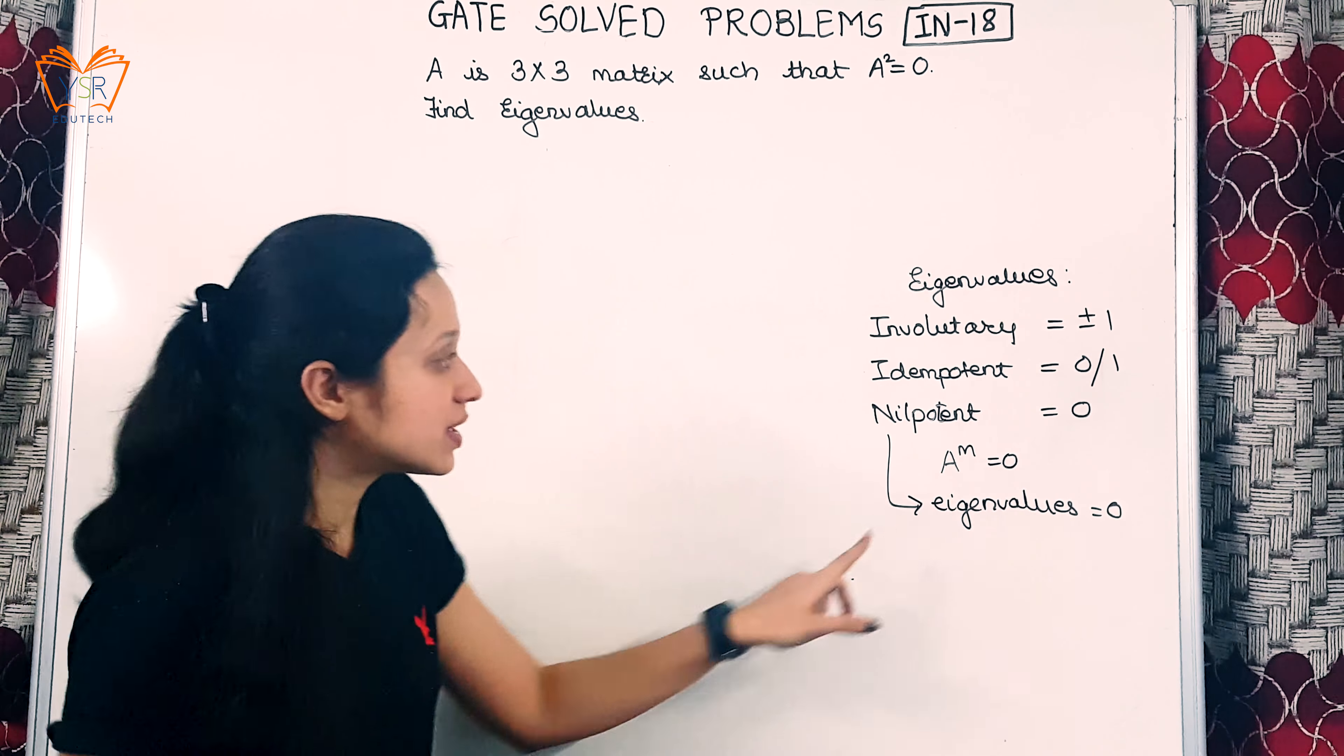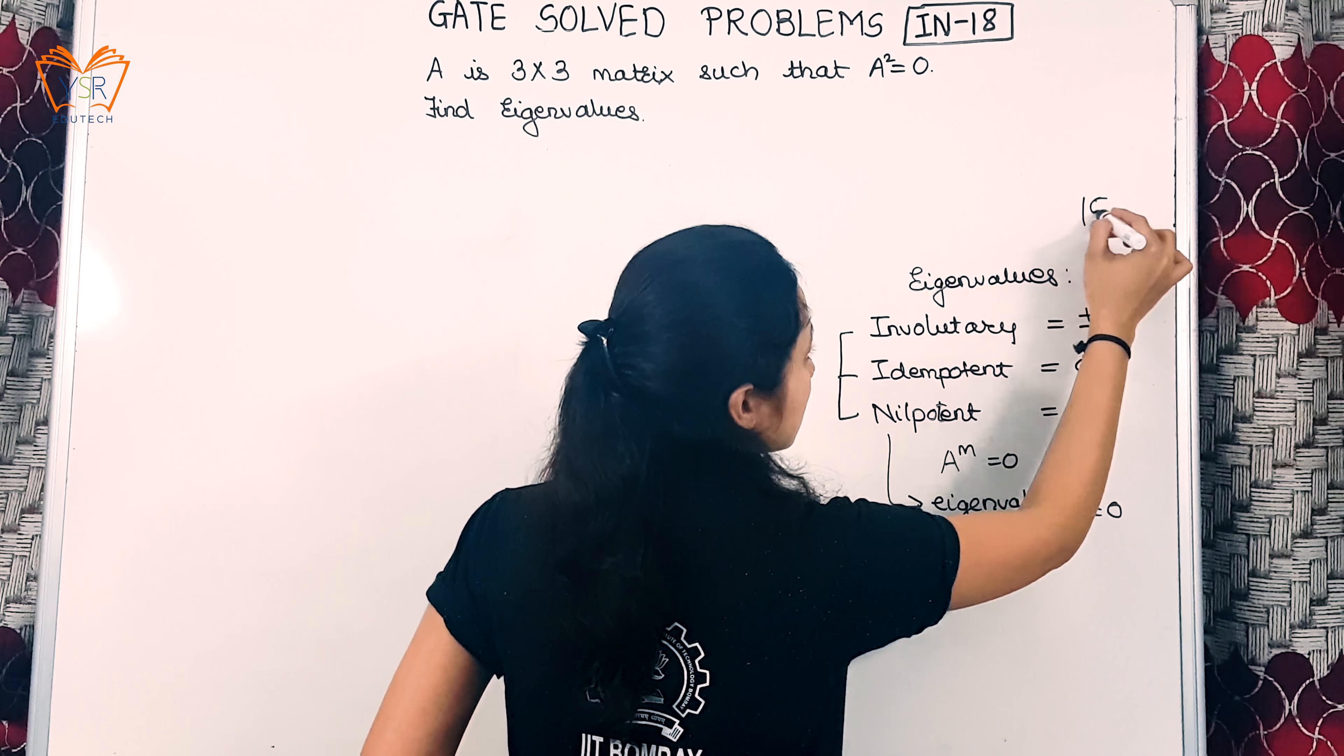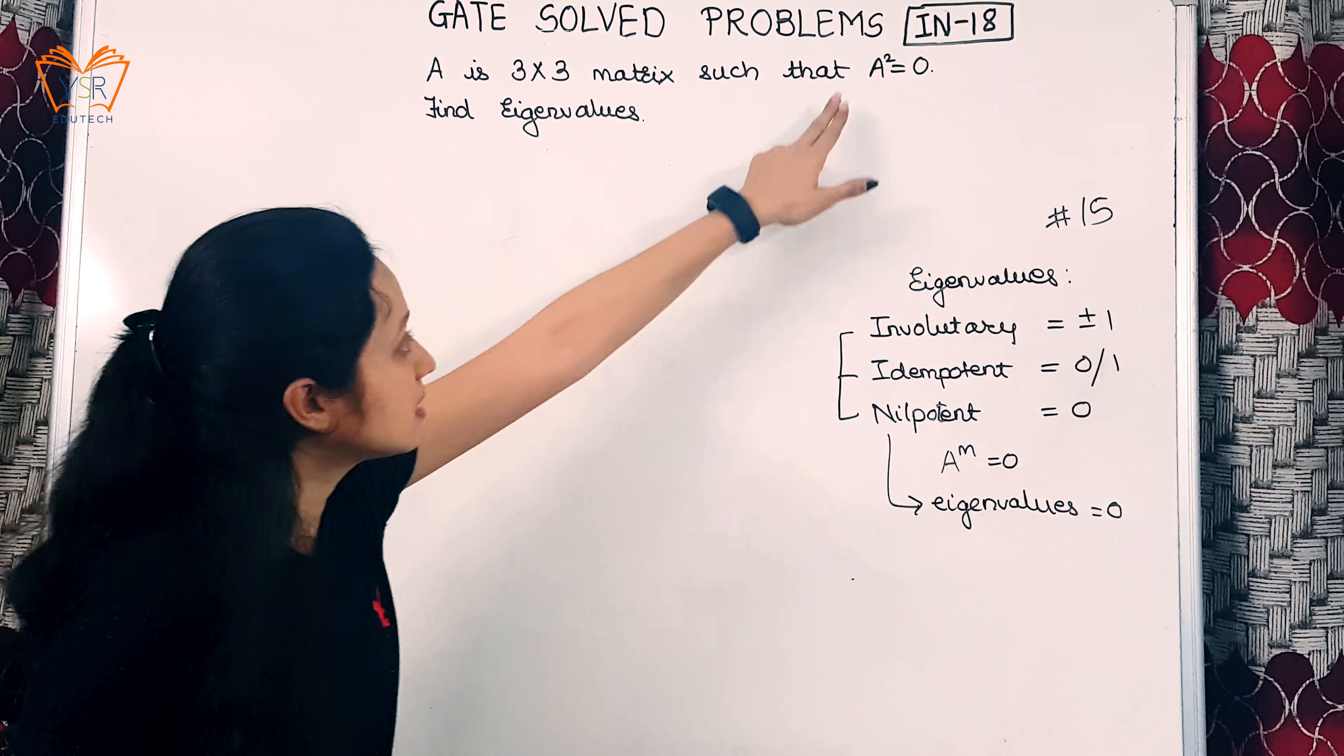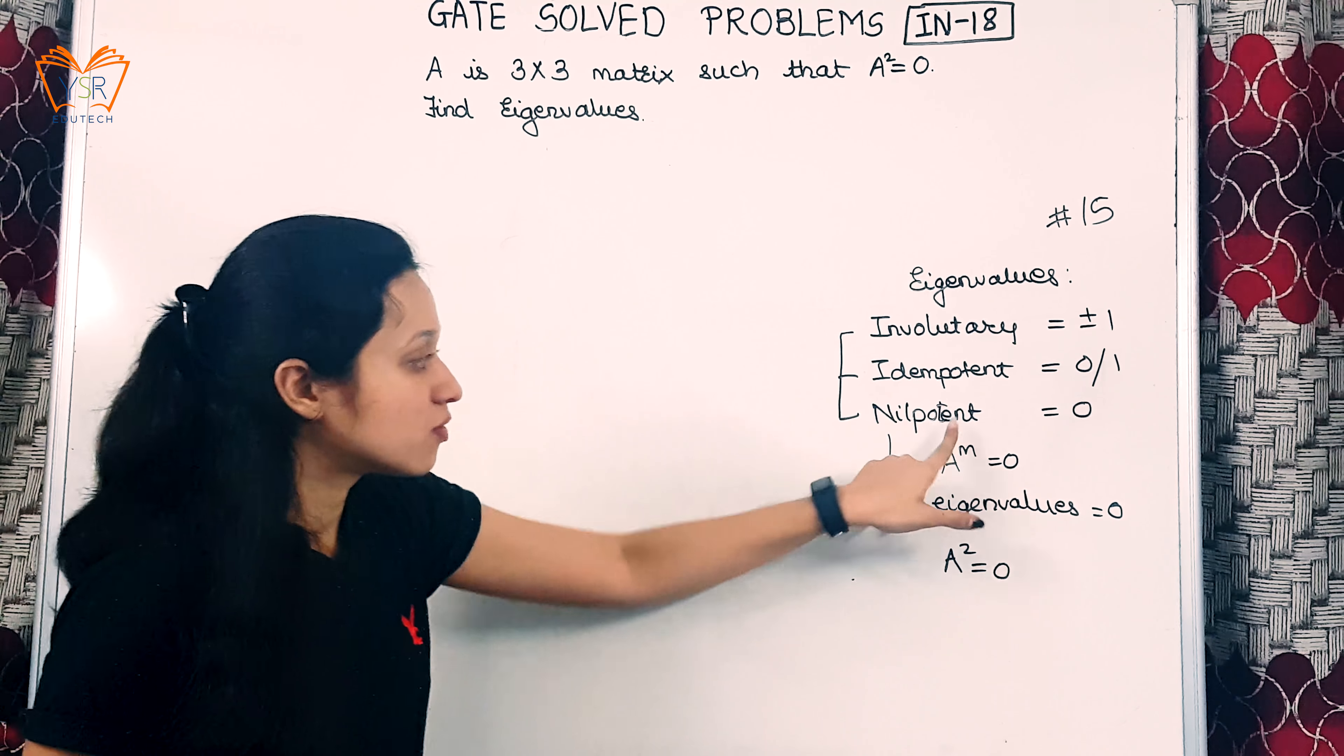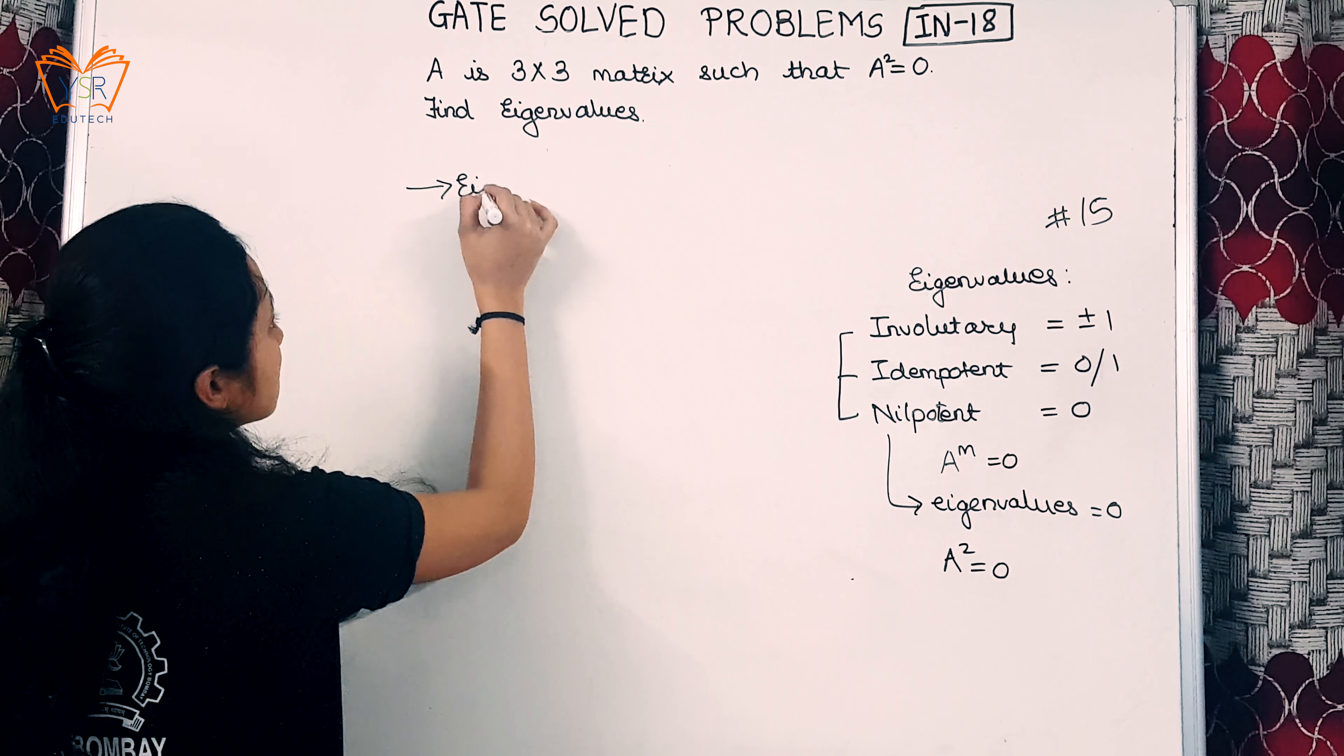This we have already studied in the proof given in video number 15. As you can see, the given matrix is of form A² = 0. We will see the proof for nilpotent matrix again. Now we know eigenvectors are given as: